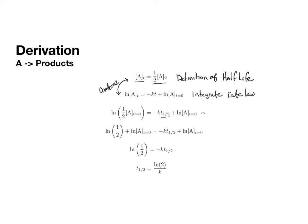To go from here, this is a log rule. Remember that the natural log of a times b is the same thing as the natural log of a plus the natural log of b. So all I did was I separated the one-half and the initial concentration.